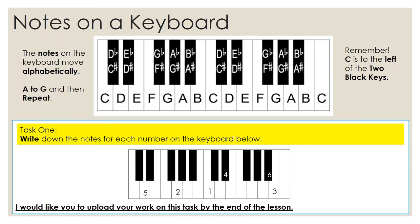Task one, I'd like you to write down the notes for each number on the keyboard below. So you can see the keyboard below doesn't have notes on it, but I put the numbers. Use the graph above to help you identify which notes are which on that keyboard, so you can show me that you can identify where the notes are on a keyboard.